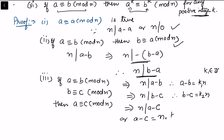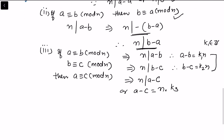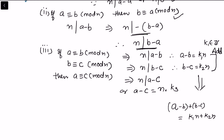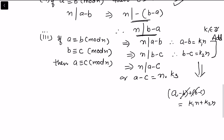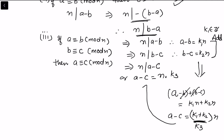We need n to divide a minus c. Adding the two expressions: (a minus b) plus (b minus c) equals k1·n plus k2·n. The b's cancel, giving a minus c equals (k1 plus k2)·n. Calling k1 plus k2 as k3, we have n divides a minus c, so a is congruent to c modulo n. Hence congruence is an equivalence relation.